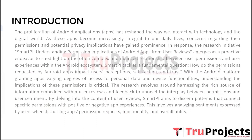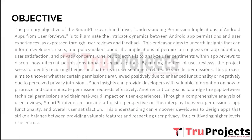The research revolves around harnessing the rich source of information embedded within user reviews and feedback to unravel the interplay between permissions and user sentiment. By delving into the content of user reviews, Smart PI aims to discover patterns that connect specific permissions with positive or negative app experiences, involving analyzing sentiment expressed by users when discussing app permission requests, functionality, and overall utility.